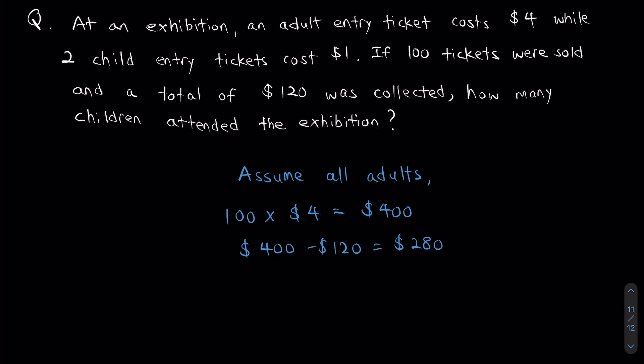What's next? In a chicken and rabbit question, at this point you'd be calculating the difference in the number of legs. Similarly, for this question, we will be calculating the difference in the cost of an adult ticket and a child ticket.